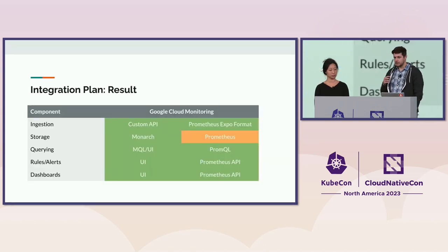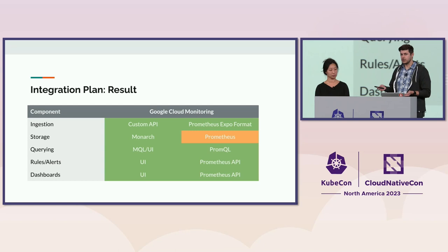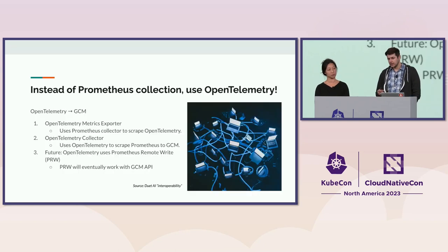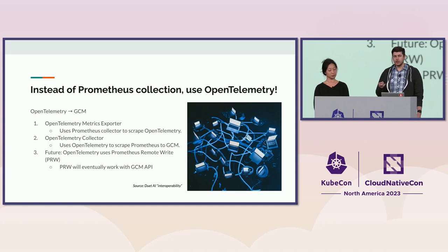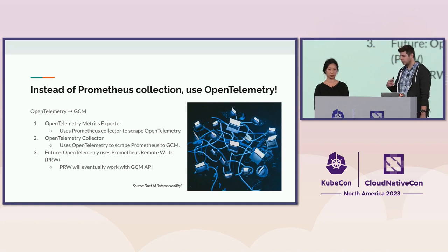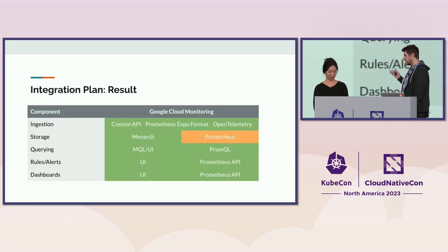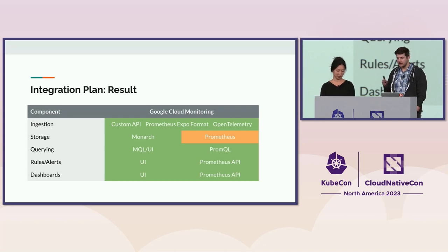Our feature matrix now looks complete — you can ingest data any way you want and also visualize or do whatever you want with the data. Last but not least, we haven't forgotten about OpenTelemetry. We hypothetically already support it because there are Prometheus bridges, and we do have an OpenTelemetry team at Google improving the space. We aren't part of that team so don't know exact details, but stay tuned. Adding OpenTelemetry to the list means whatever the users want, they have it.